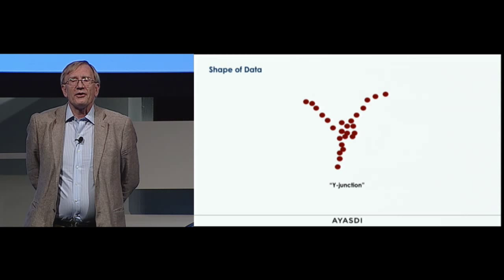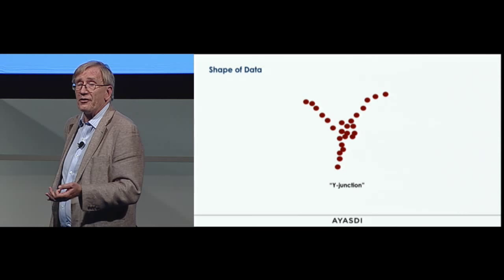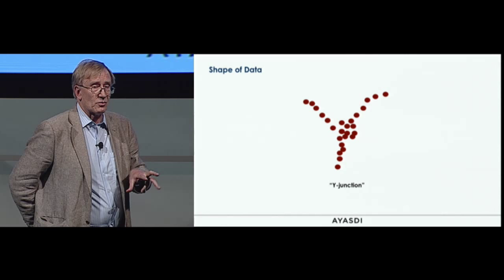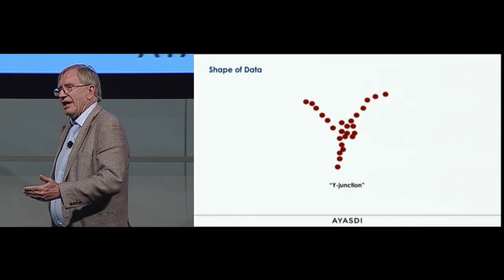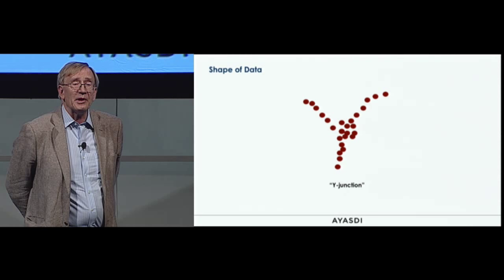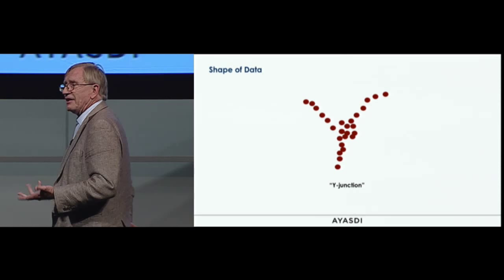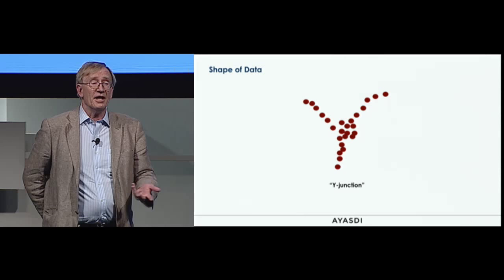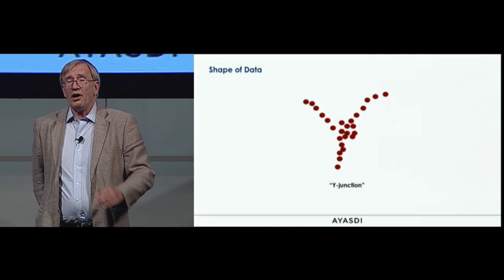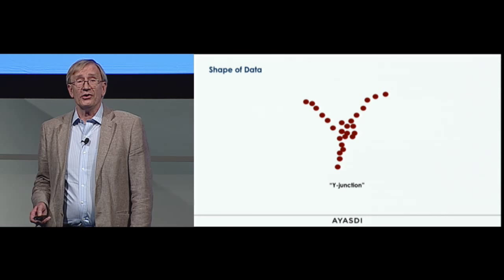Then we might get confronted with yet another kind of shape: a Y-junction. This could occur when there's a process going on — the normal behaviors are at the middle of this Y-junction, and the extreme behaviors are at the tips. We could build a Y-junction detector, but the idea is to get away from one-off methods that capture individual shapes and instead do a kind of modeling that captures all the shapes at once.